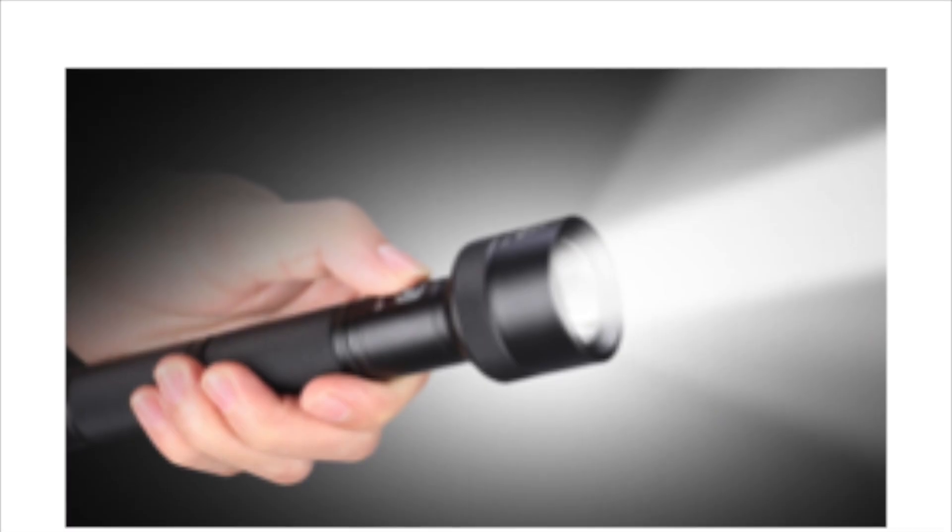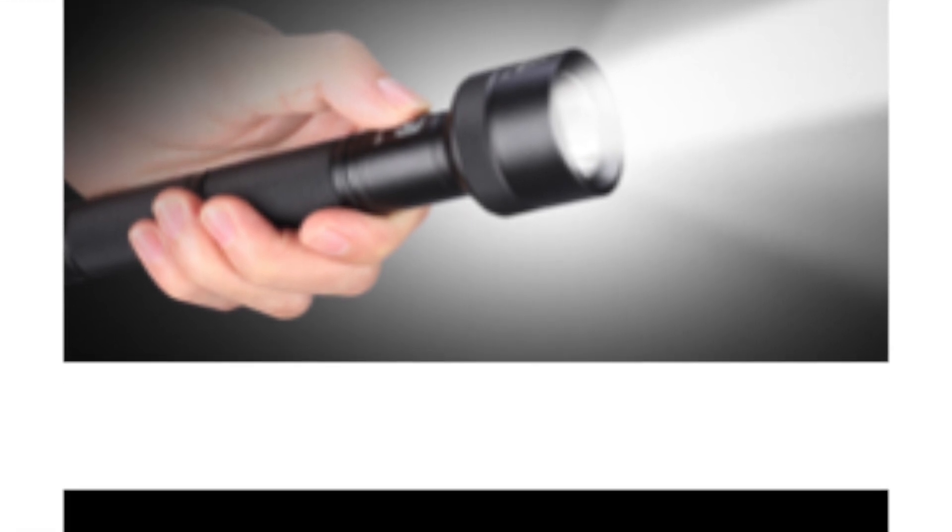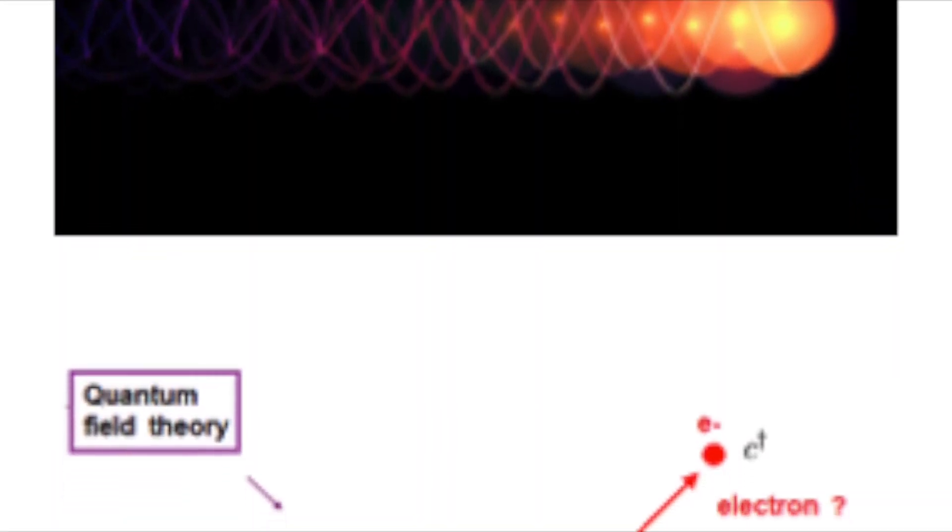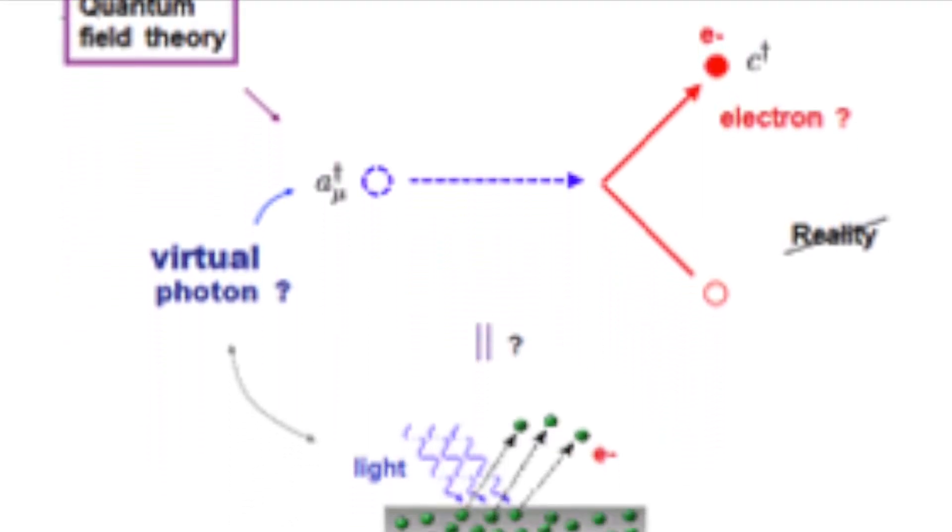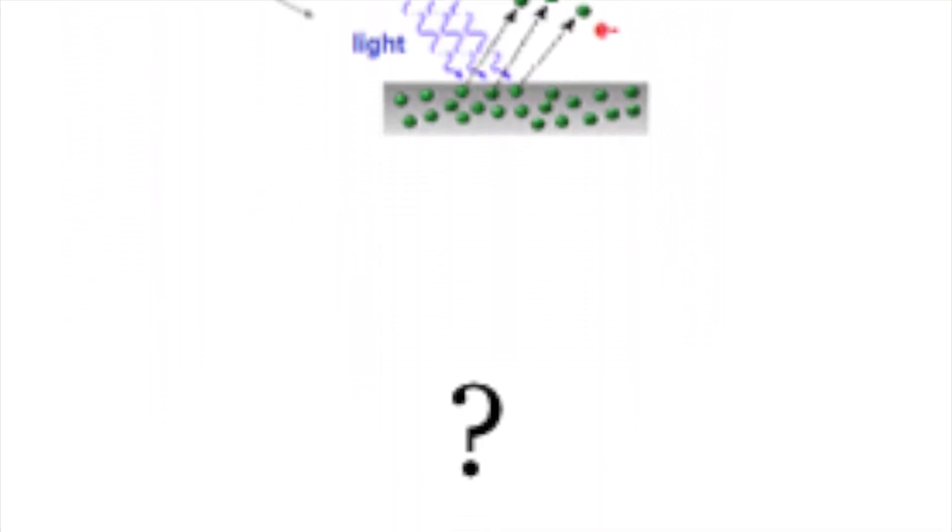The properties of light may be explained by the properties of photons. The properties of photons may be explained by the properties of the photoelectric field. And the properties of that field may even one day be explained by the properties of something more fundamental still.